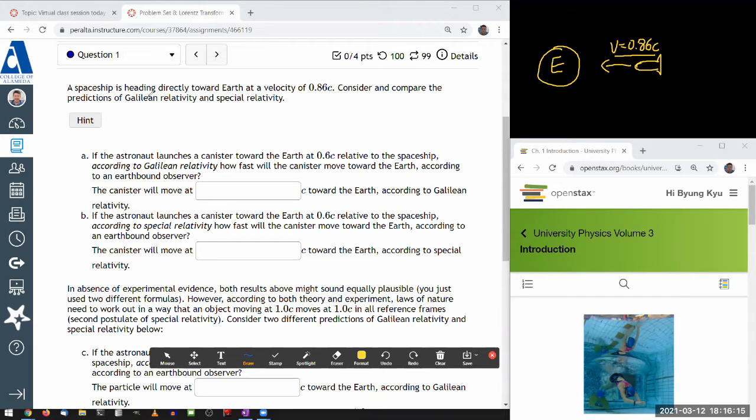Considering compare predictions of Galilean relativity and special relativity. Galilean relativity is the intuitive kind of relativity that a lot of you would have guessed without me telling you explicitly. So in part A, if the astronaut launches a canister towards Earth, and in the reference frame of the astronaut or spaceship it's moving at speed of 0.6c, then according to Galilean relativity, this should move at 0.86c plus 0.6, so 1.46c toward Earth. That's what Galilean relativity would predict. And I think from last week, you do know that this answer is wrong.